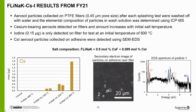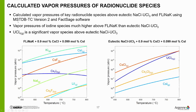A summary of results from last year with FlyNaK showed we did detect cesium-bearing aerosols with a clear temperature trend. Taking advantage of the MSTDB-TC version 2, which includes iodine, thermodynamic modeling of the two salt compositions tested showed that iodine species have much higher vapor pressures in FlyNaK than in the chloride salt, and that UCl4 gas is a significant vapor species.